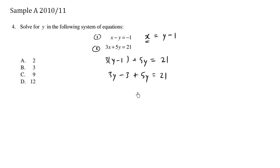3y plus 5y is 8y is equals to, I'm going to move the 3 over, it becomes a plus 3. 21 plus 3 becomes 24. I'm going to divide both sides by 8. We have y is equals to 3.